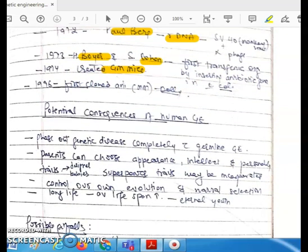In 1974, a GM mice was created. In 1996, Dolly was created. After a brief history of genetic engineering, what are the advantages of human genetic engineering? The first obvious advantage is to phase out any kind of genetic disorder completely by using germline genetic engineering.